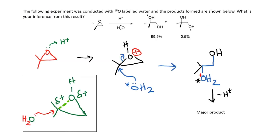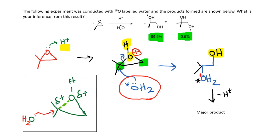The next question involves O18-labeled water attacking an epoxide in the presence of H⁺. In the presence of H⁺, the epoxide ring can be protonated to form a protonated epoxide. This becomes a very good leaving group because it is a neutral hydroxyl group that is leaving. The center here can be a site for attack, or attack can also occur at the other position. Given the result that 99.5% of one product and 0.5% of the other is formed, it is highly likely that the attack happens as shown — giving the product with the oxygen label, which is the major product.